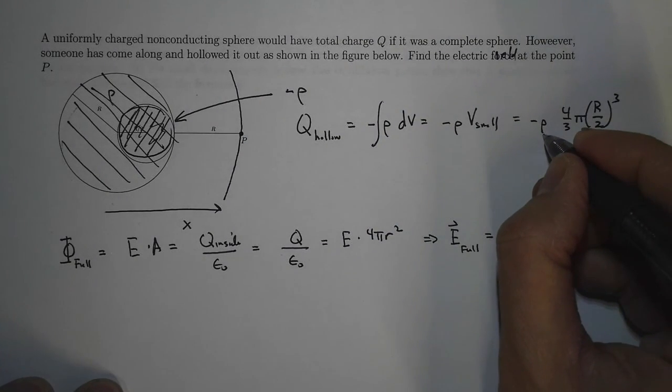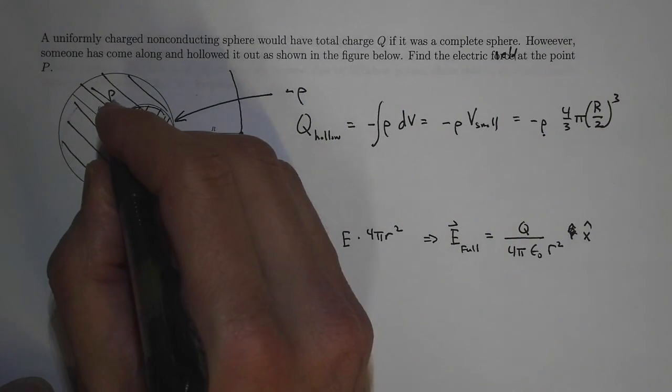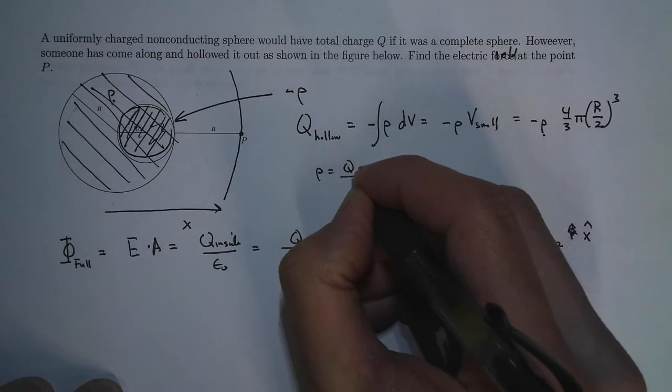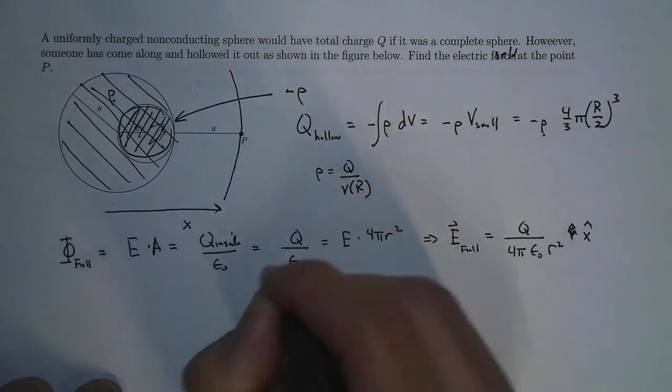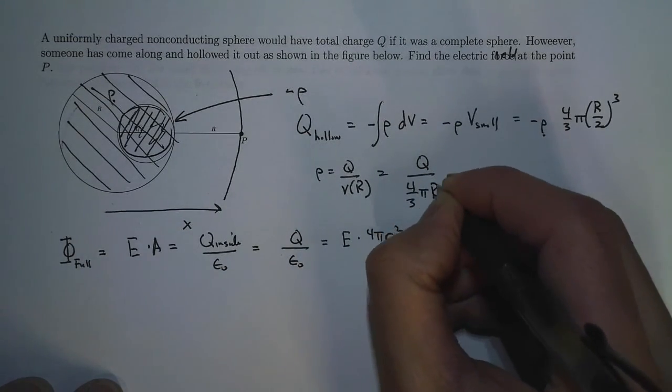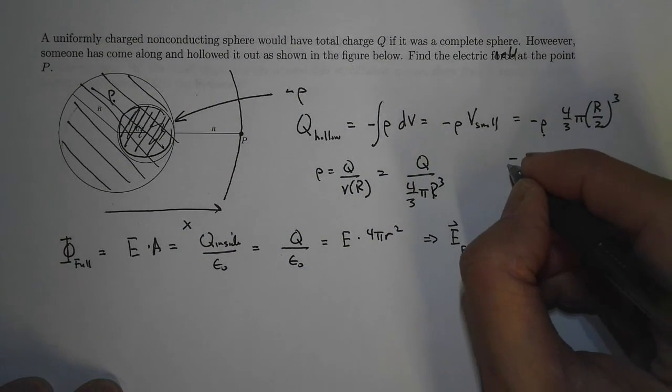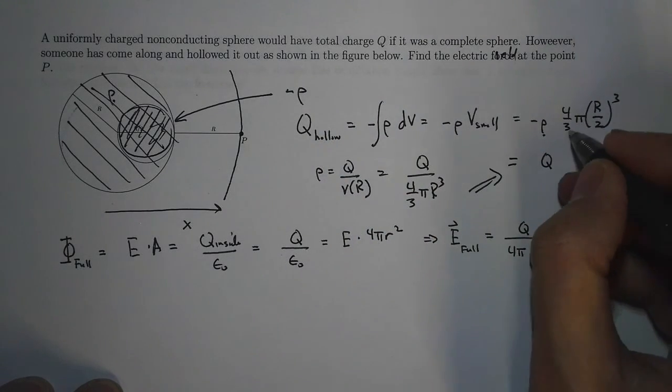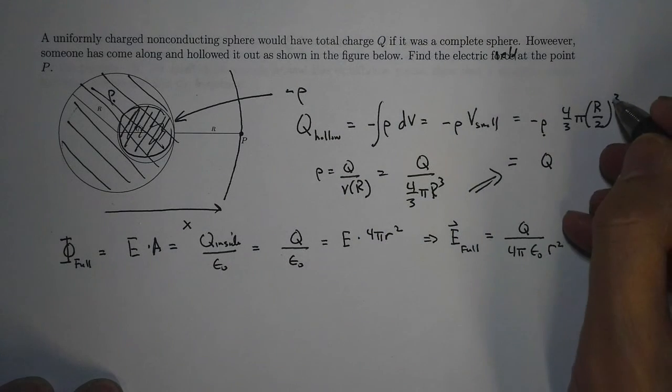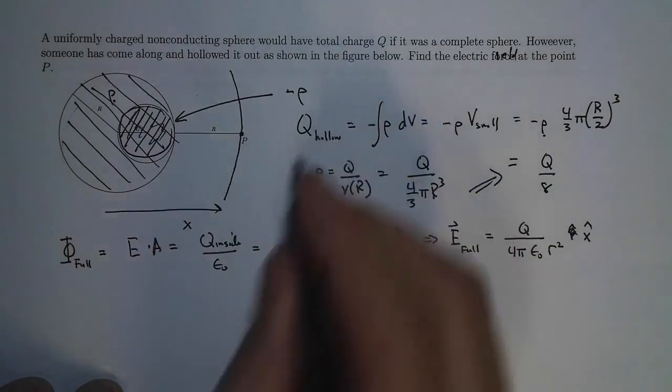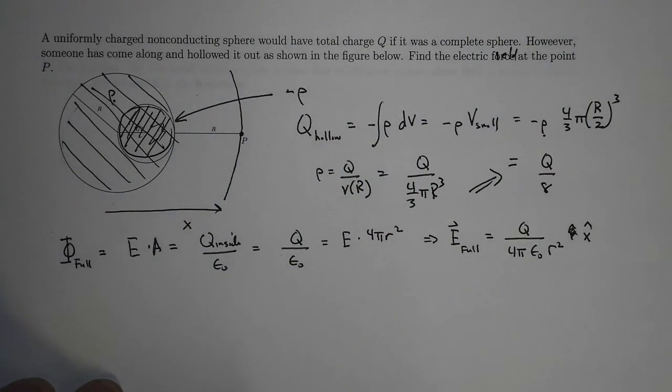What is the charge density rho? Rho is the charge density of the full sphere, so rho equals Q over the volume of the full sphere, which is Q over 4 thirds pi capital R cubed. If we plug all these things together, the 4 thirds pi cancel, the R cubes cancel, and only the 2 to the third power, which is 8, remains. So Q of the hollow sphere is just Q over 8.